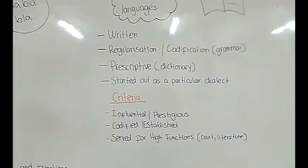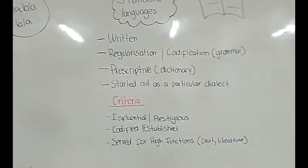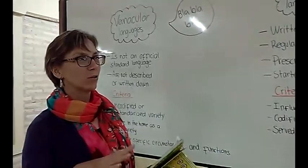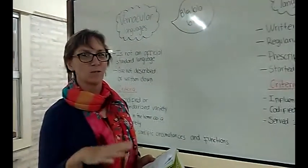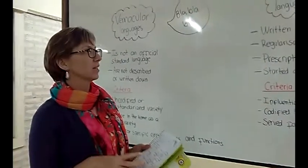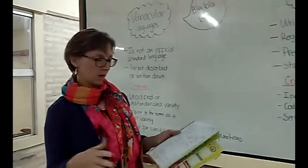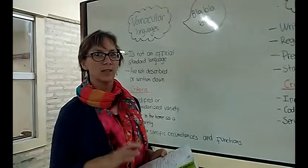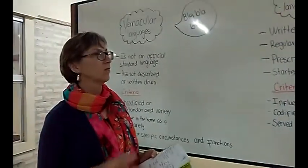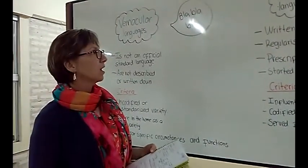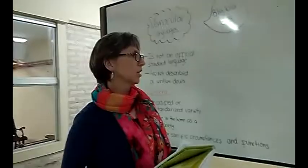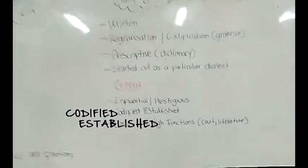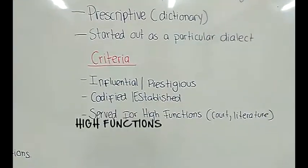We have several examples. One example would be French, where the monarch decided that the whole country of France had to speak the kind of French that was spoken around Paris. So out of that dialect, a national language developed. Another example would be German, where when Martin Luther translated the Bible, the dialect that he used became the official German language for the whole country, even though it was just a dialect in the beginning. The criteria for standard languages are that it is influential and prestigious, it is codified and established, and it serves for high functions like court or literature.